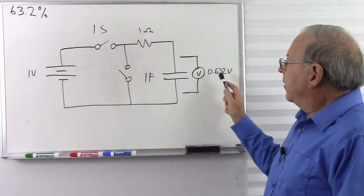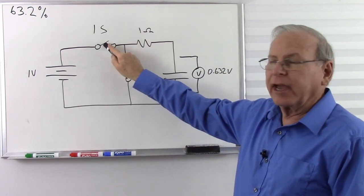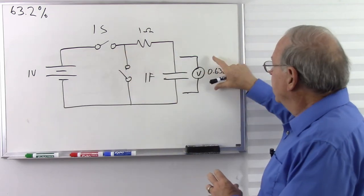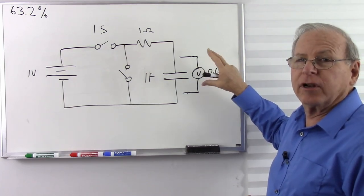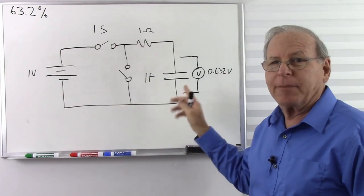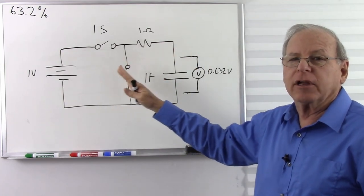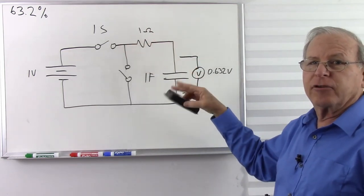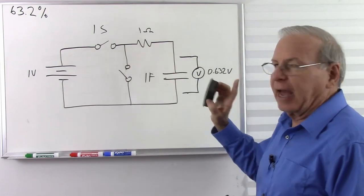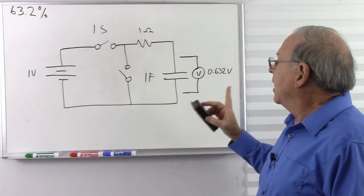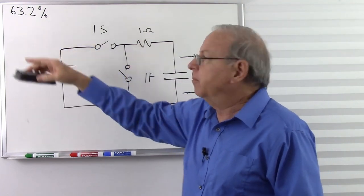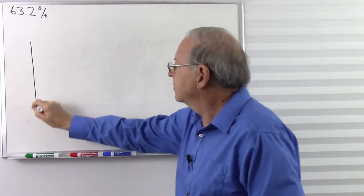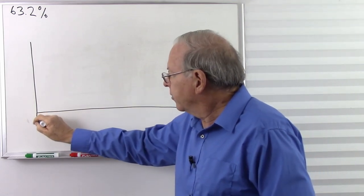In the first second it charges quickly. But what happens when we close the switch for another second? The capacitor is now pushing back, so it won't charge as fast. Let's look at equal time intervals rather than how long it takes to reach a particular milestone. We'll stay at 1 ohm and 1 farad but go back to 100 volts. Let's draw a graph with time on the x-axis — 0, 1, 2, 3, 4, 5 seconds — and voltage on the y-axis.